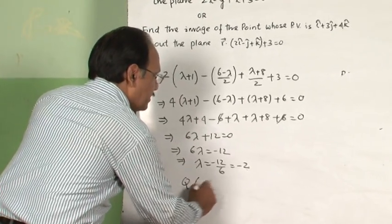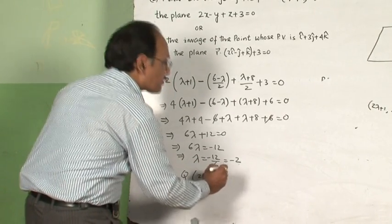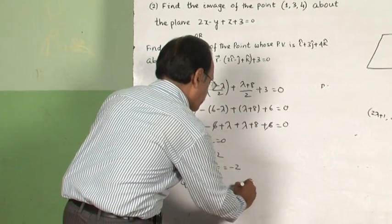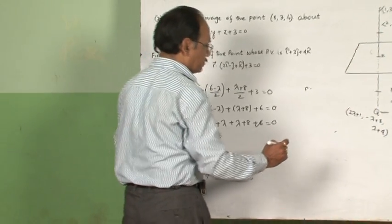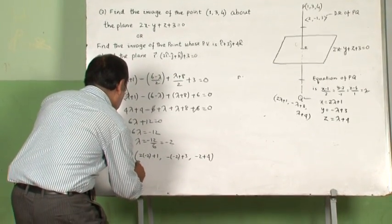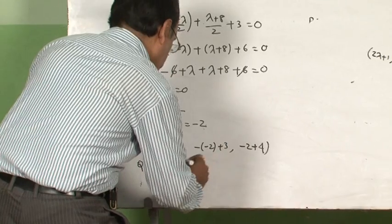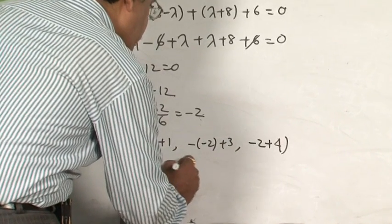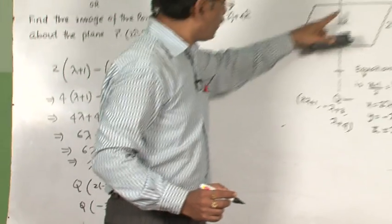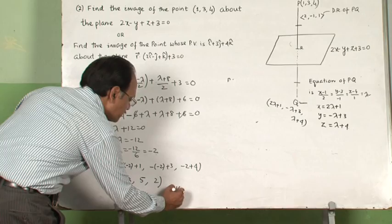Substituting λ = -2 into the coordinates: Q = (2(-2)+1, -(-2)+3, -2+4) = (-4+1, 2+3, 2) = (-3, 5, 2). So the image of the point (1, 3, 4) is (-3, 5, 2).